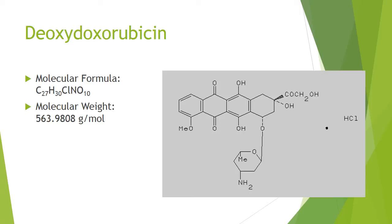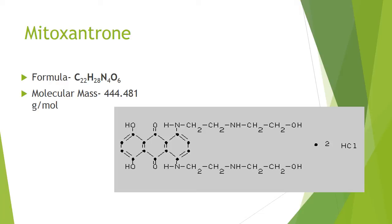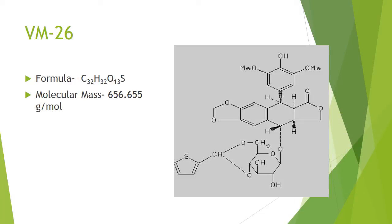Esorubicin exhibits less cardiotoxicity than the parent antibiotic doxorubicin. This compound lacks the hydroxy group at position 4 on the amino sugar of the anthracycline. Mitoxantrone, another name is Novantrone, is an anthracenedione anti-neoplastic agent. It is synthesized from dantron, which when reacted with nitric acid and then mixed with sodium sulfate and thiosulfate in base.